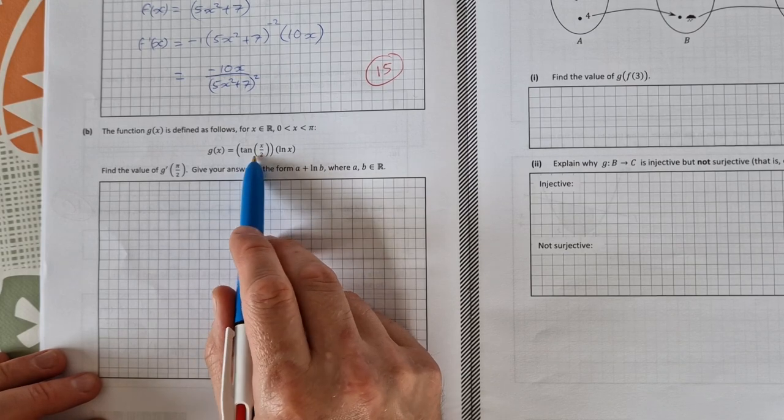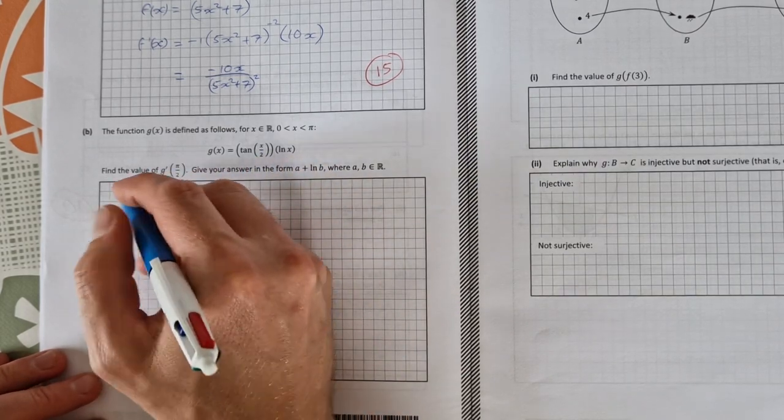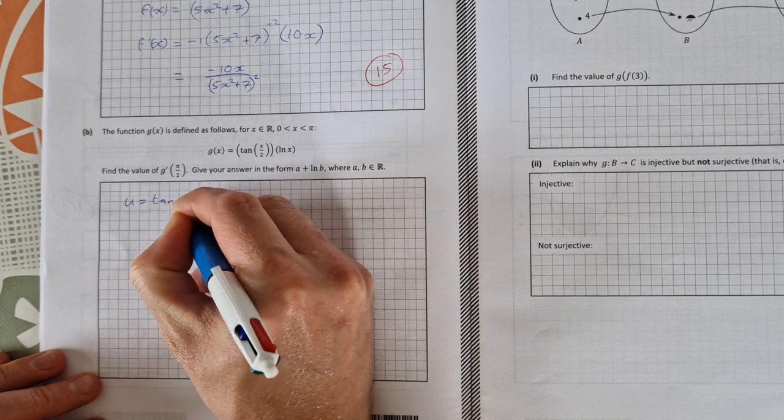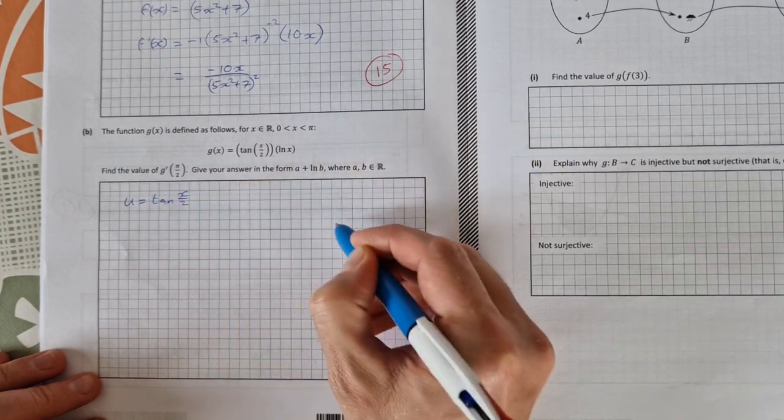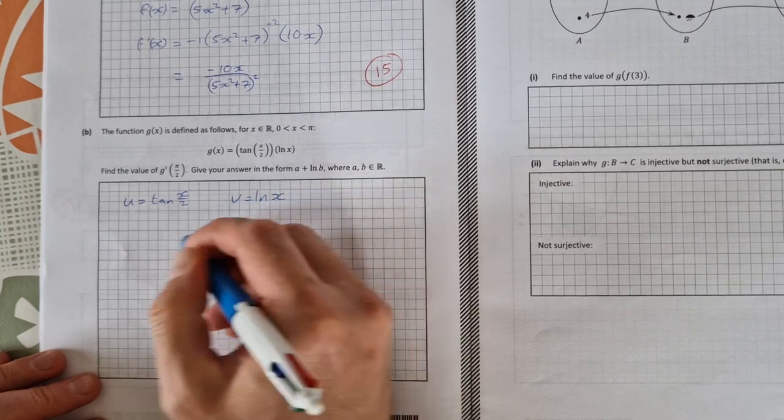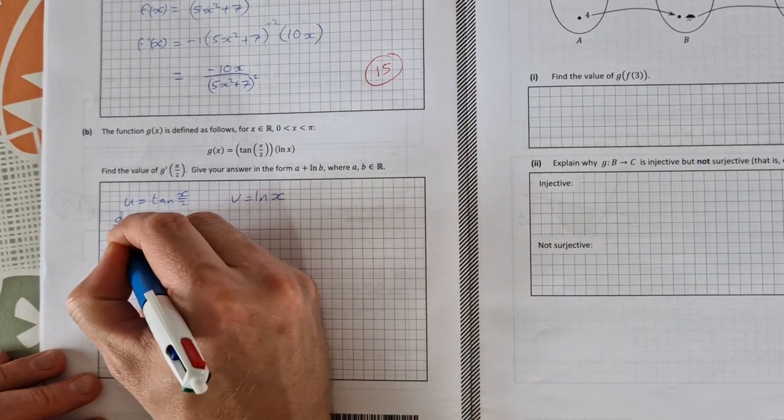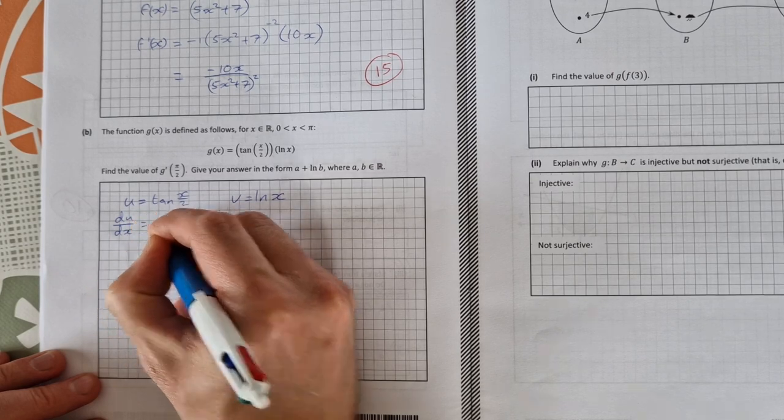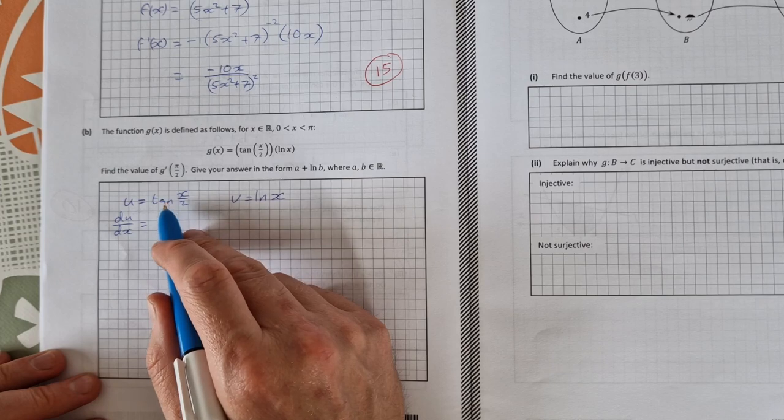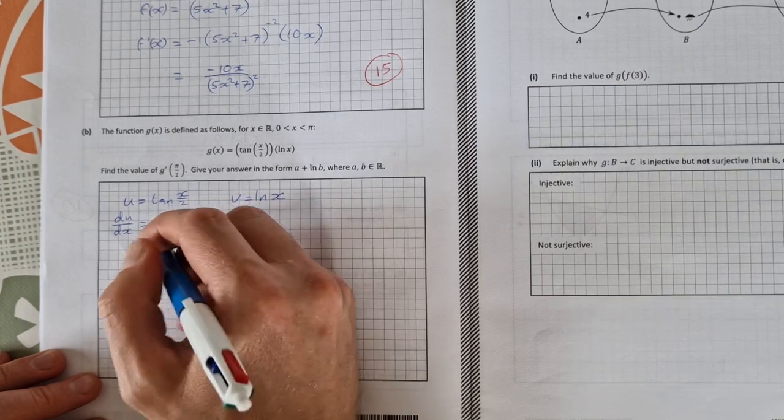So this is a product rule so we'll start off saying u equals tan of x over 2 and v equals the natural log of x. So if we find du dx then the derivative of tan of x over 2 is secant squared x over 2 times a half, so it'll be a half secant squared x over 2.